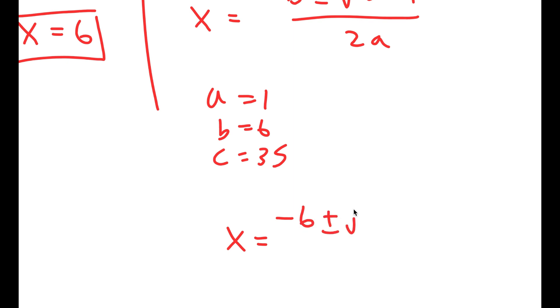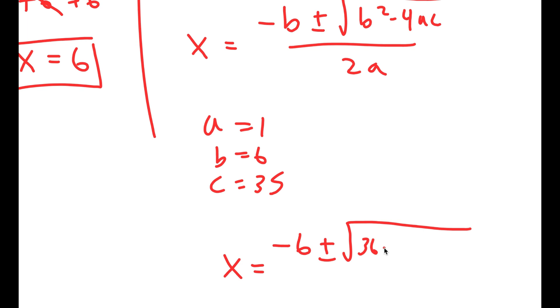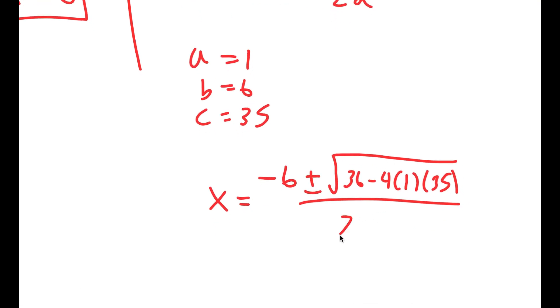So again, x equals negative 6 plus or minus the square root of 6 squared, which is 36 minus 4 times a, which is 1, times c, which is 35, all over 2a. So 2 times 1.